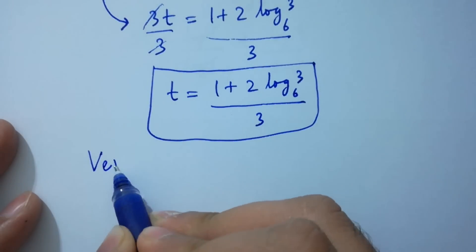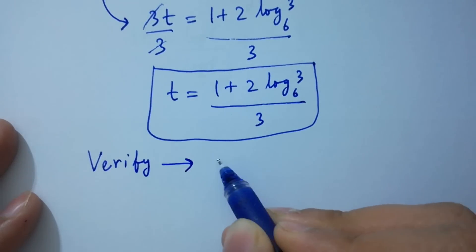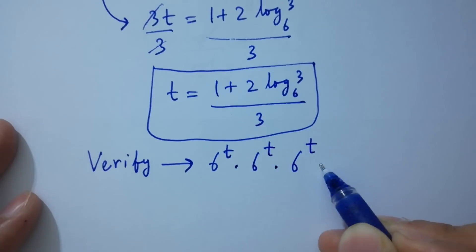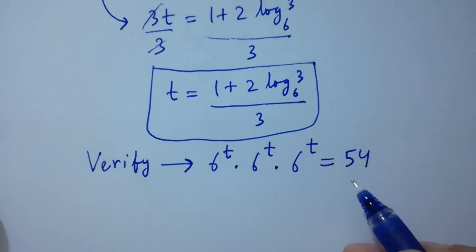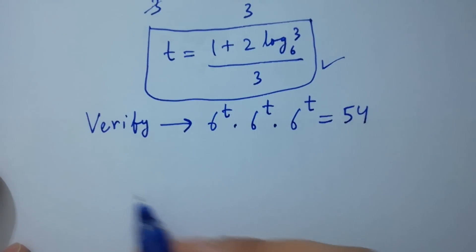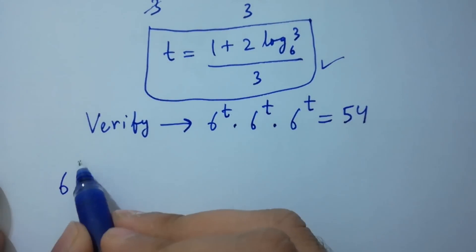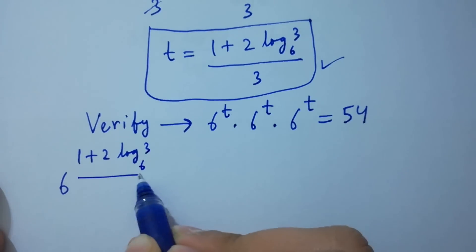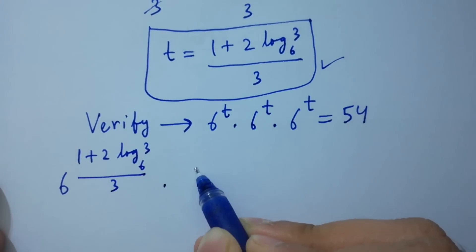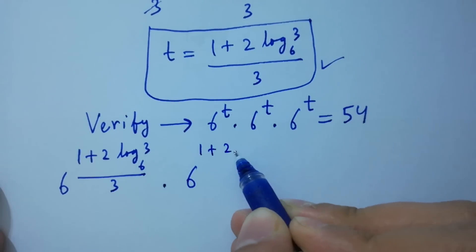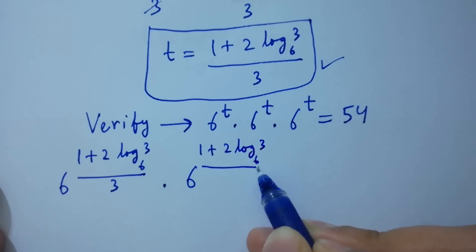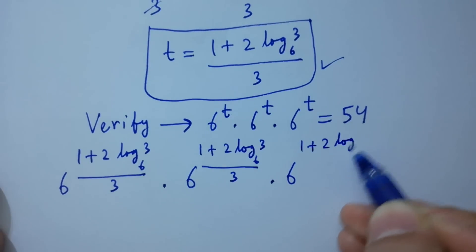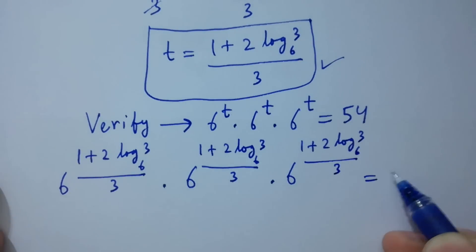Now I am going to verify. We substitute the value of t: 6 to the power (1 plus 2 log 3 to the base 6) over 3, times 6 to the power (1 plus 2 log 3 to the base 6) over 3, times 6 to the power (1 plus 2 log 3 to the base 6) over 3, equals 54.